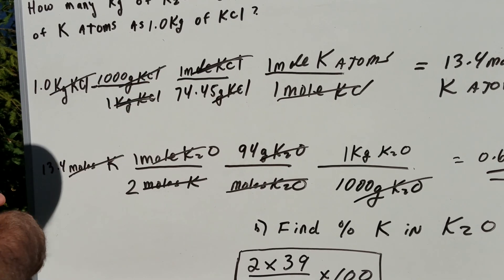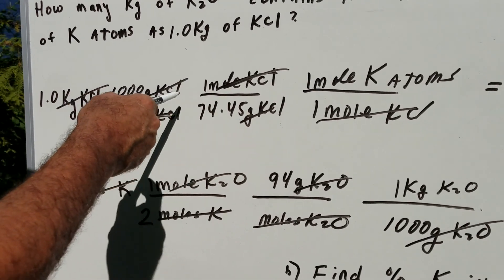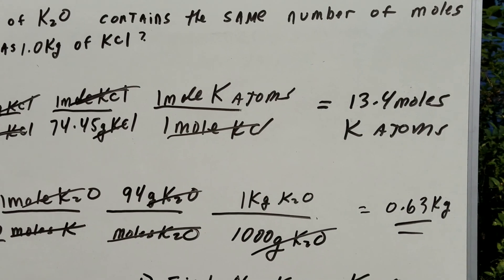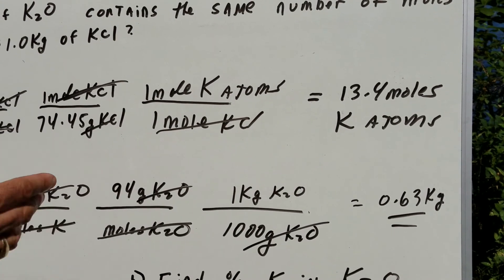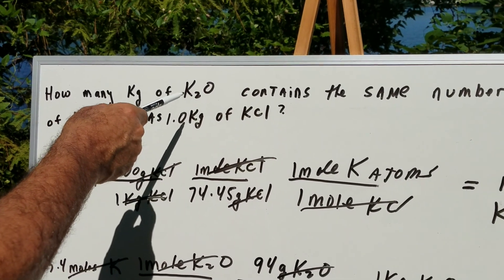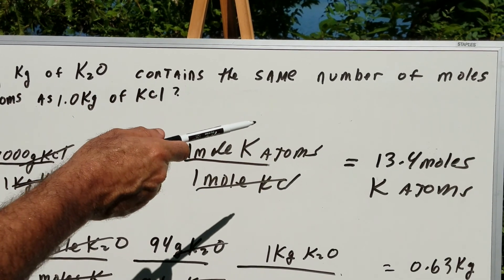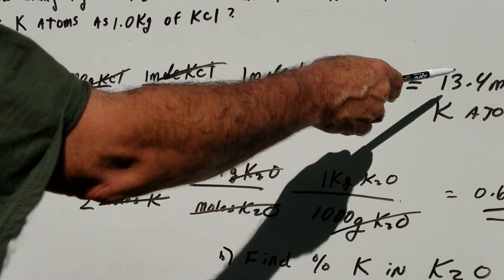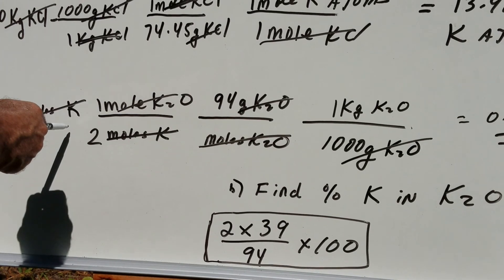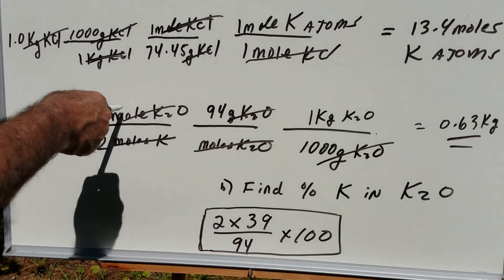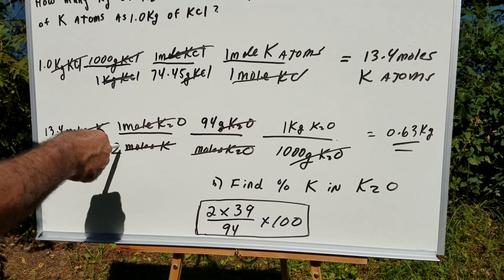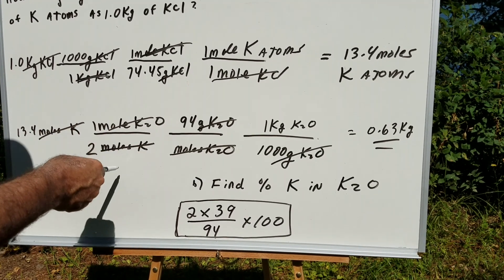And the numbers on the DAT will be a lot nicer, but a thousand divided by the 74.45 gave me 13.4 moles of potassium or potassium atoms. Now here we want to know how many kilograms of the potassium oxide contains the same number of moles, so that means we're going to take the 13.4 moles of potassium atoms. There's one mole of K2O contains two moles of potassium atoms, so